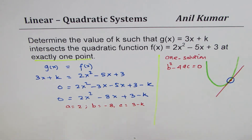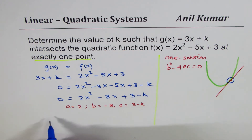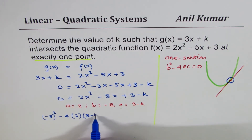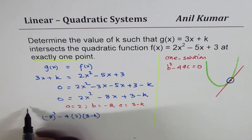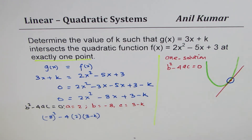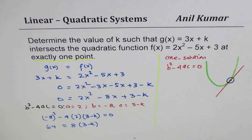Now we substitute into the discriminant and set it equal to zero. b² is (-8)² = 64, and 4ac is 4 × 2 × (3 - k). So we are equating b² - 4ac to 0. We get 64 = 4 × 2 × (3 - k), which simplifies to 64 = 8(3 - k).